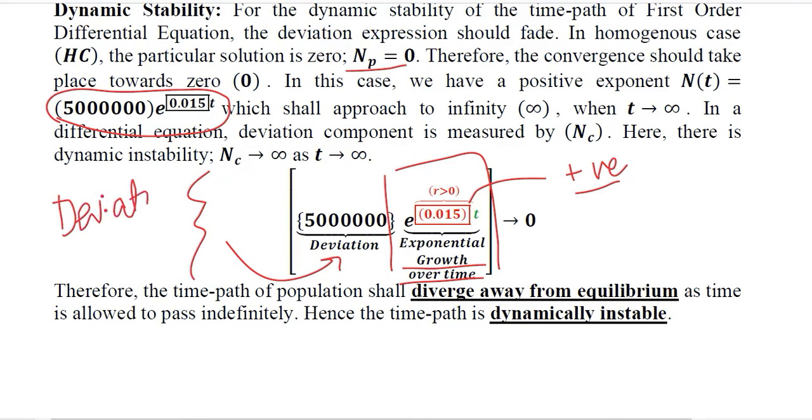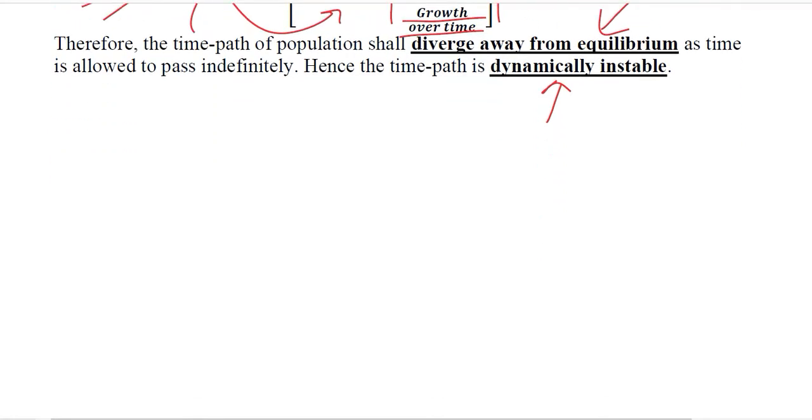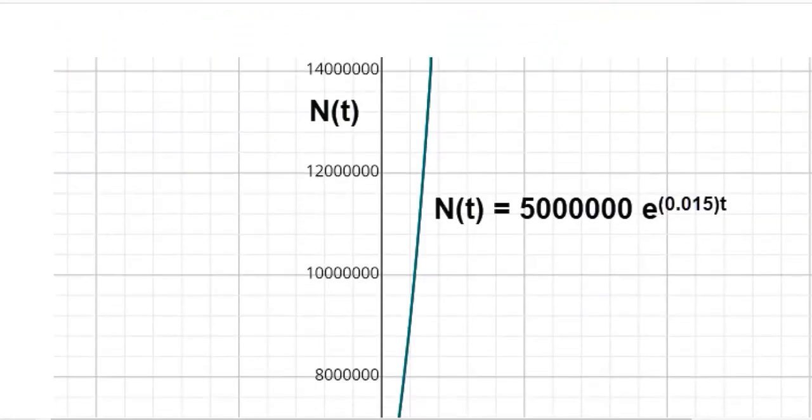In other words, we will move away from the equilibrium, which definitely leads to divergence, and we can say that the equilibrium is dynamically unstable. We are diverging away from the equilibrium in this case, which should be better understood by using this graph.